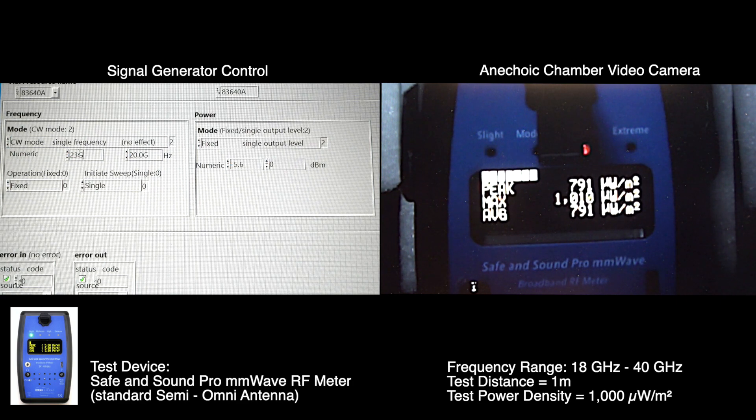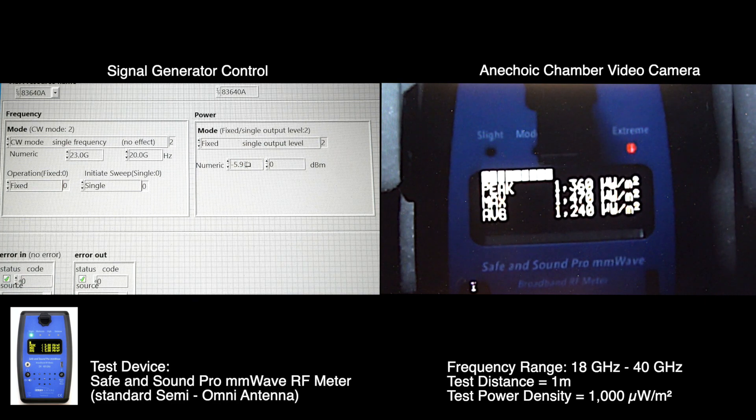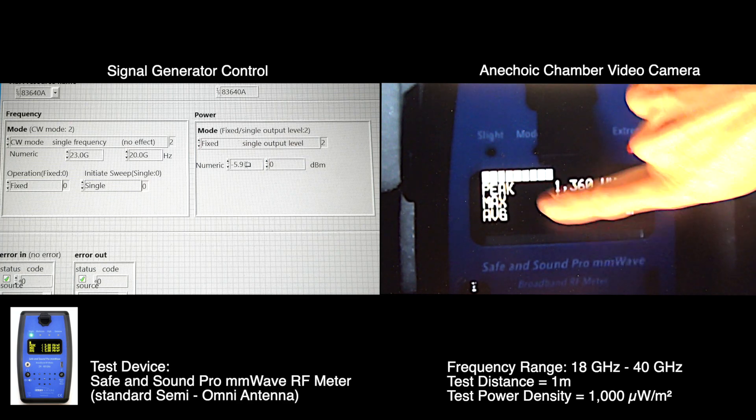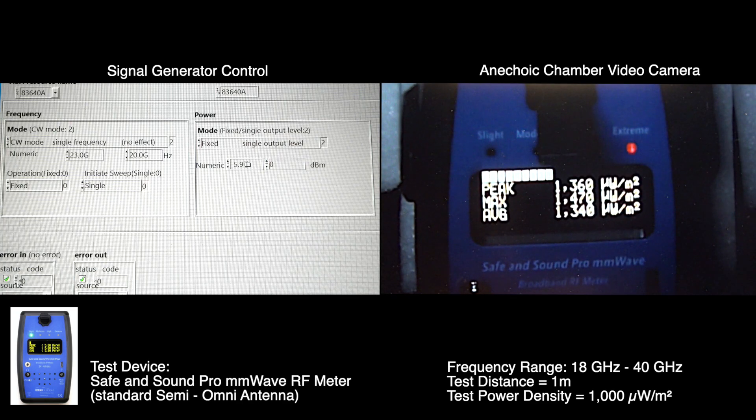23 gigahertz. Minus 5.9 dBm. 1340 microwatts per square meter. This is me wiggling my hand in real time, just so you know. 24 gigs. Same power level. 2200 microwatts per square meter.